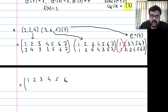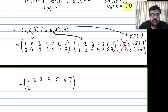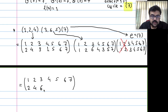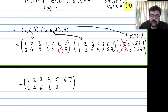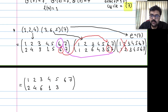Computing the product: 1 goes to 2 in the first, 2 goes to 2 in the second, so 1 goes to 2. Then 2 goes to 4, and 4 goes to 4, so 2 goes to 4. Then 3 goes to 3 in the first, 3 goes to 6 in the second, so 3 goes to 6. Then 5 goes to 5 in first, 5 goes to 3 in second, so 5 goes to 3. Also 6 goes to 6 in first, then 6 goes to 5, so the image of 6 is 5.